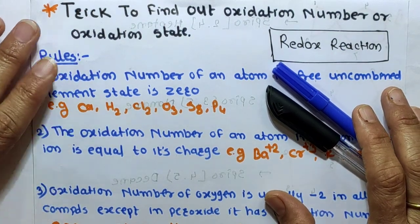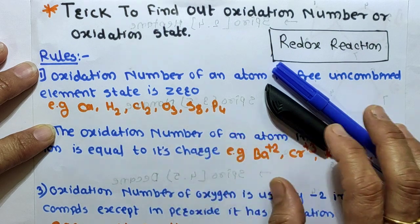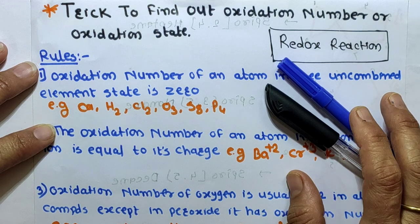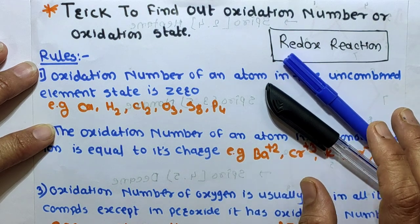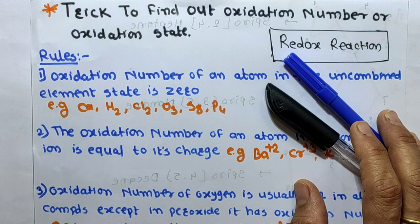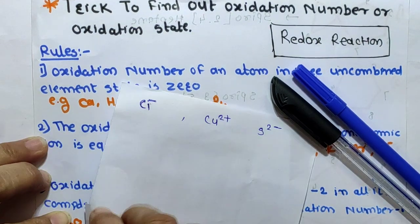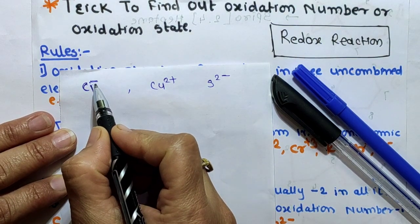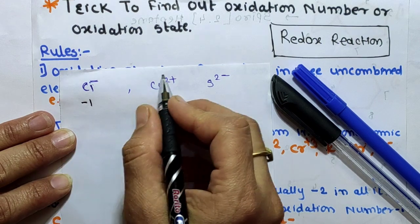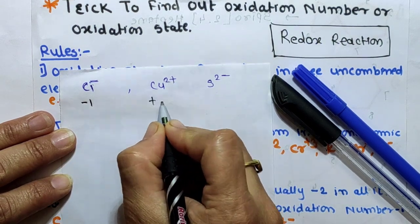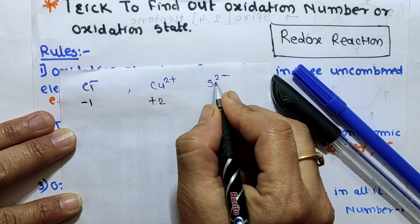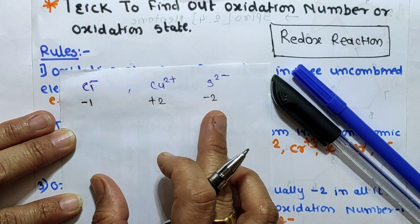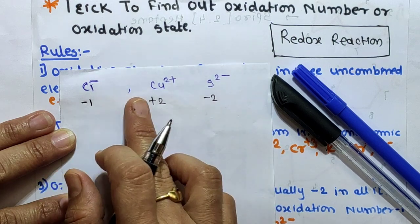First of all, let's look at what is meant by oxidation number. The oxidation number or oxidation state of an atom in a molecule or ion is defined as the number of charges it would carry if electrons were completely transferred. For example, Cl⁻ carries a minus 1 charge, so its oxidation number is -1. Cu²⁺ has a +2 charge so its oxidation number is +2, and sulfur S has oxidation number -2. The oxidation number of monoatomic ions is equal to the charge of the ion.